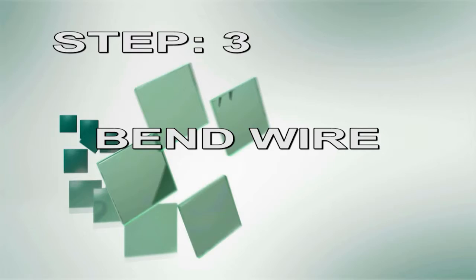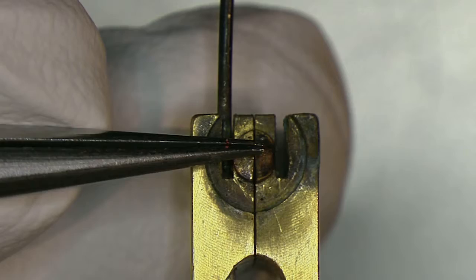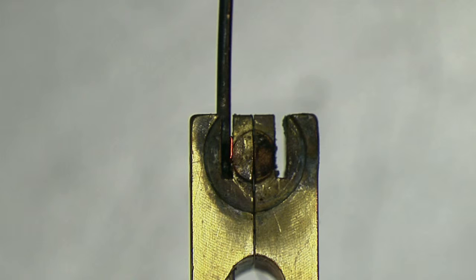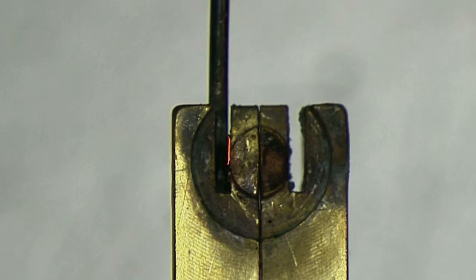Step 3. Bend wire. Using tweezers, form a slight bend that is approximately 2 to 5 millimeters long in the wire. The bend will create more area for the wire to bond to the ring.